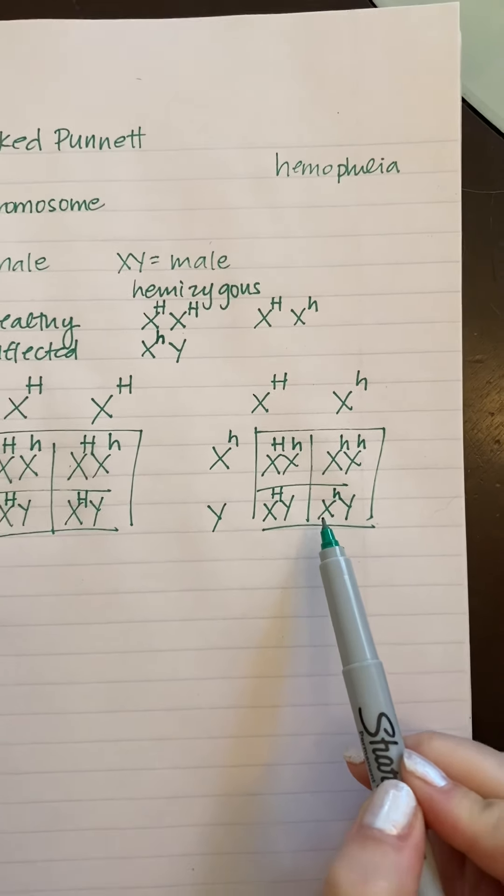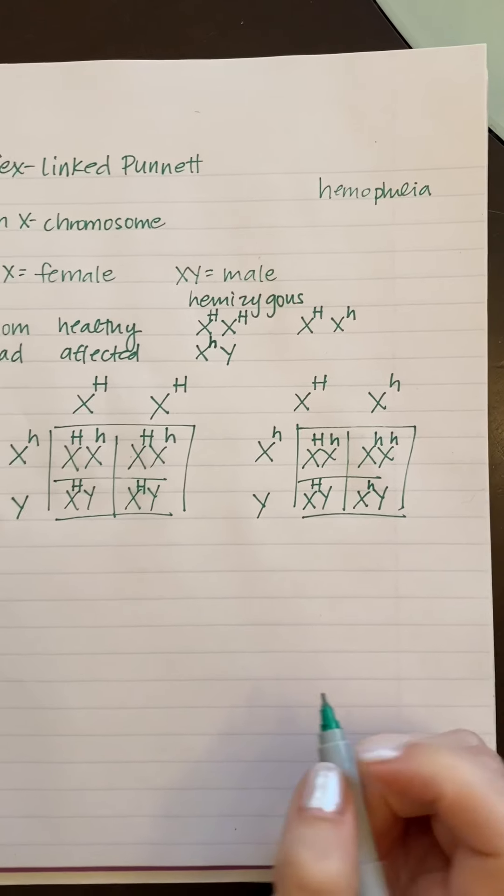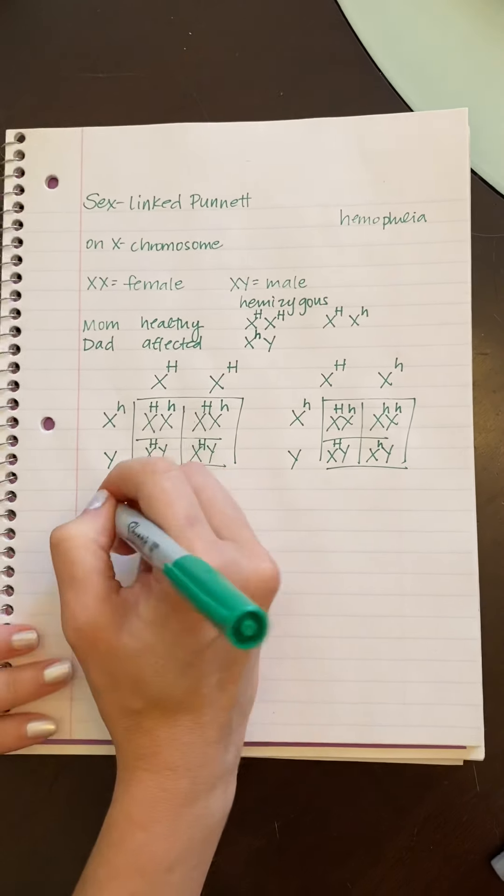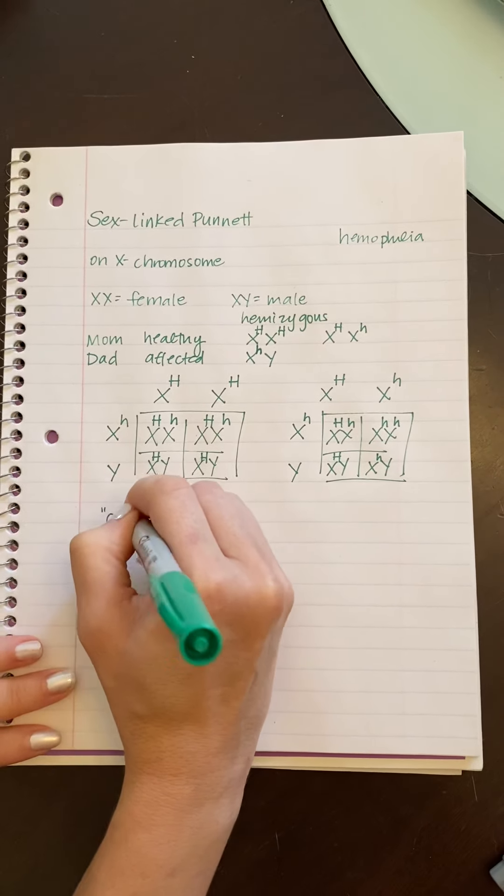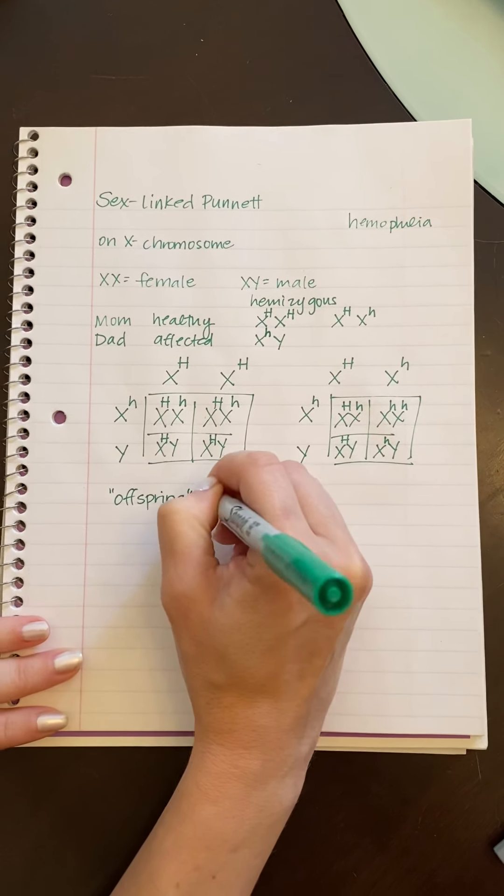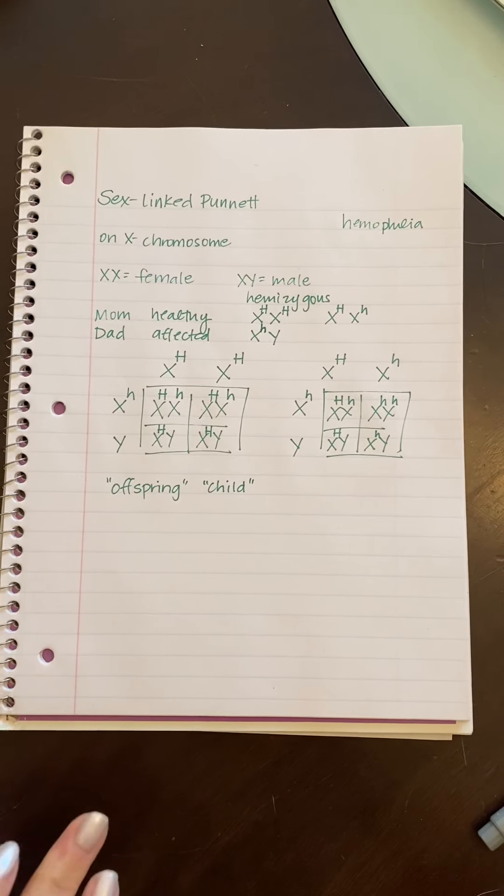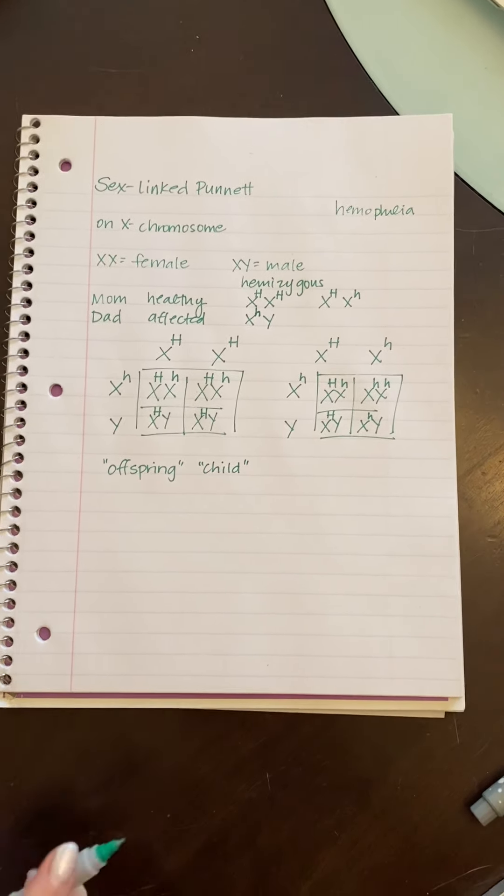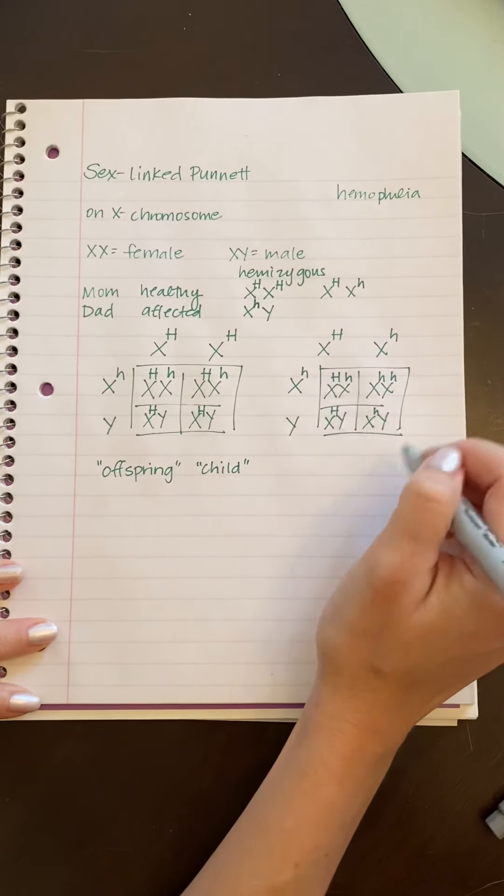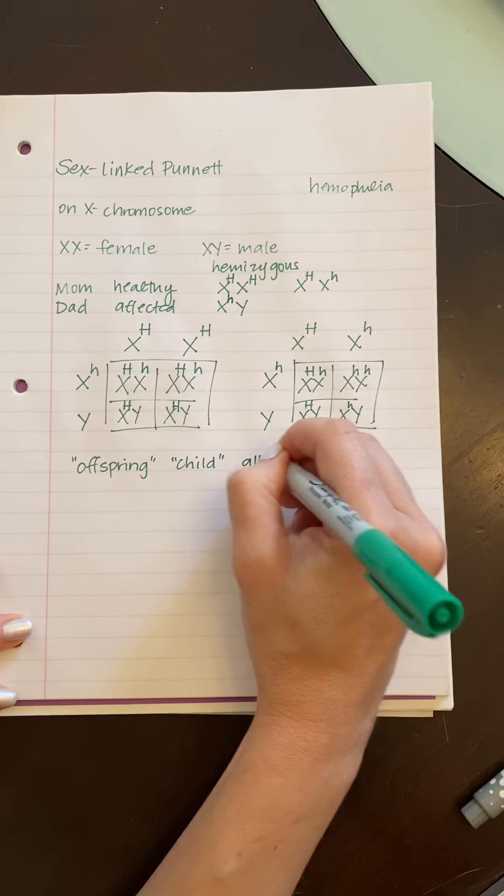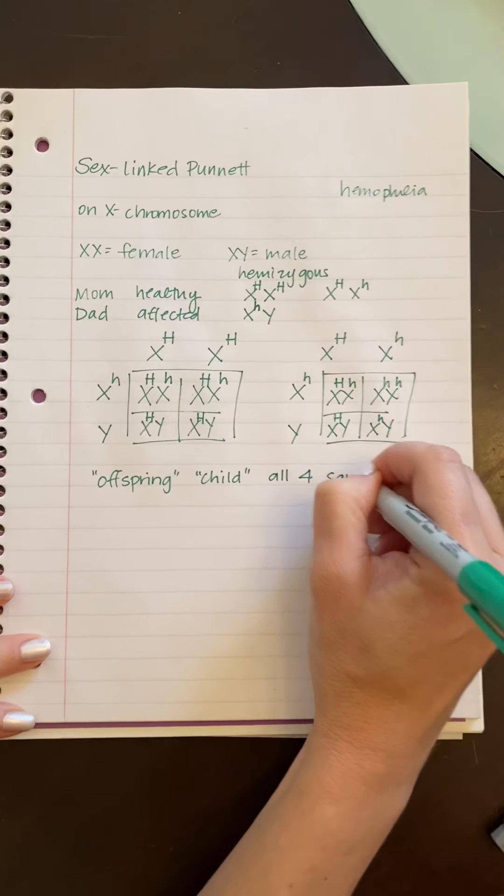Now here's where it's really important. If I ask you the chance of an offspring or a child, those do not talk about the sex of the child. So you're going to look at the complete box. You're going to look at all four of the squares.